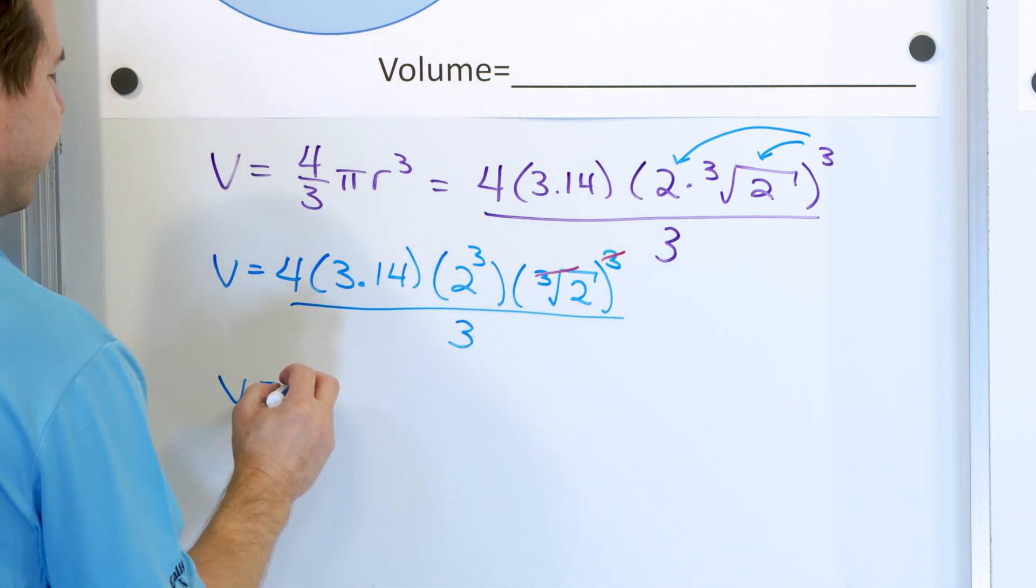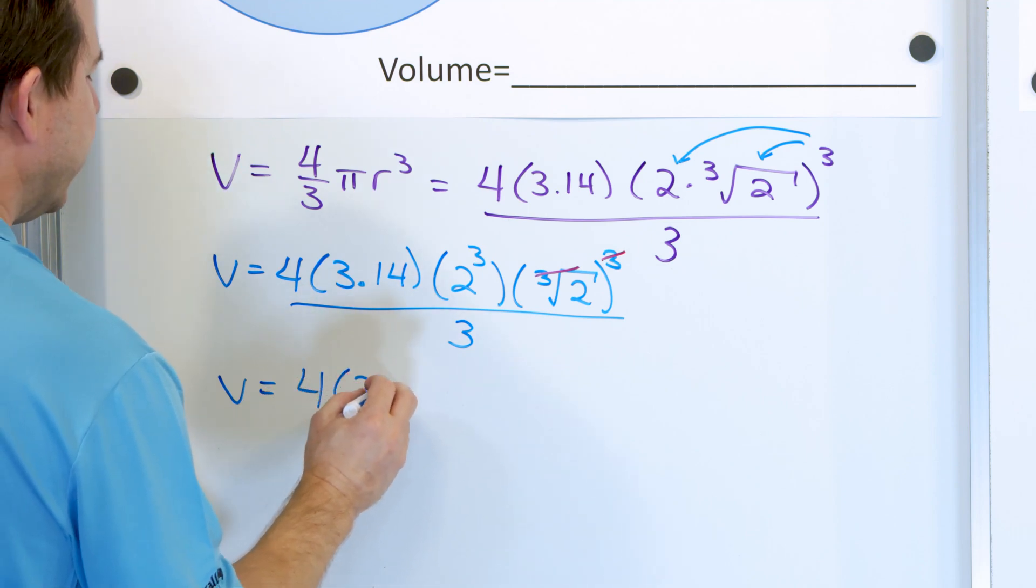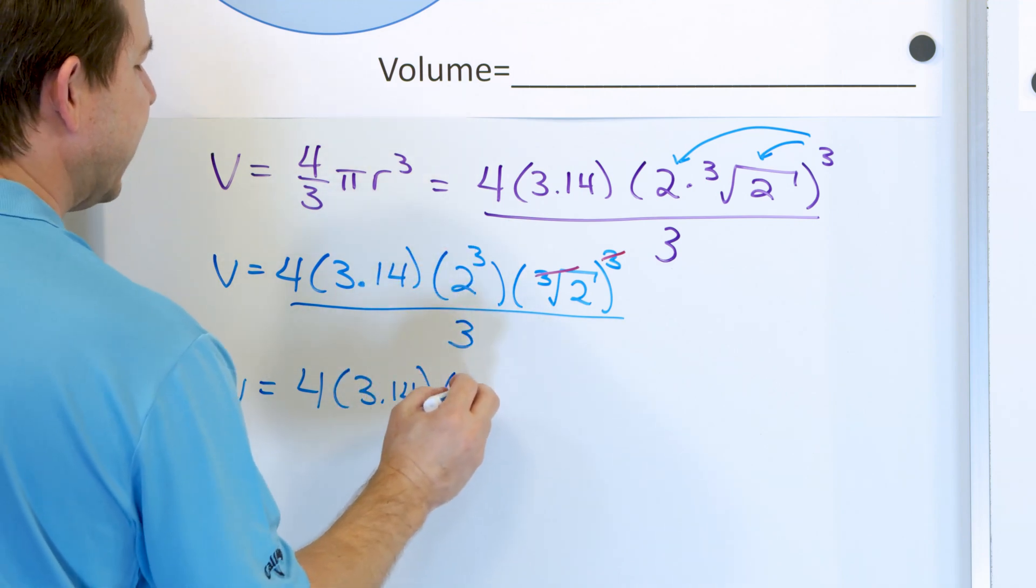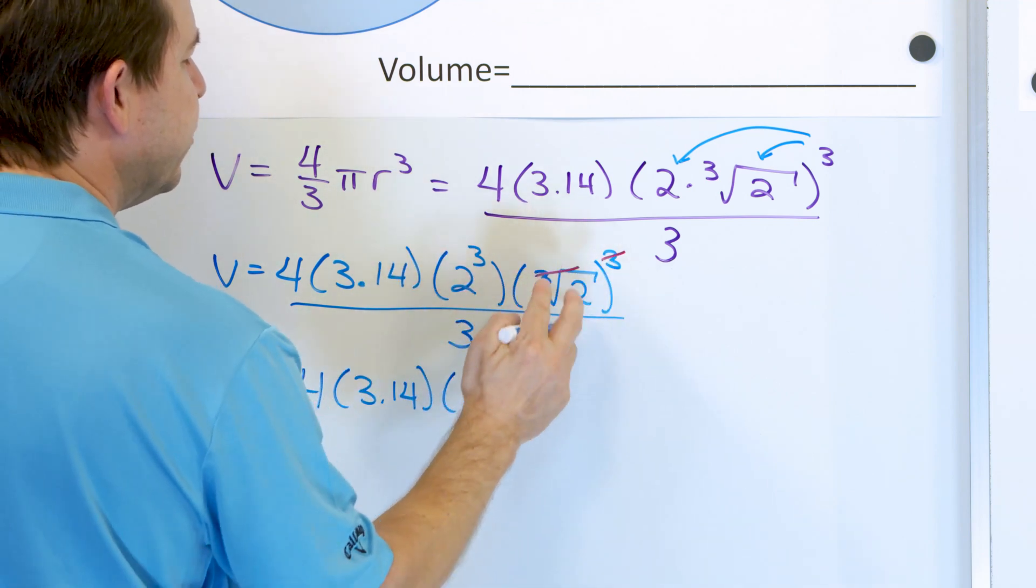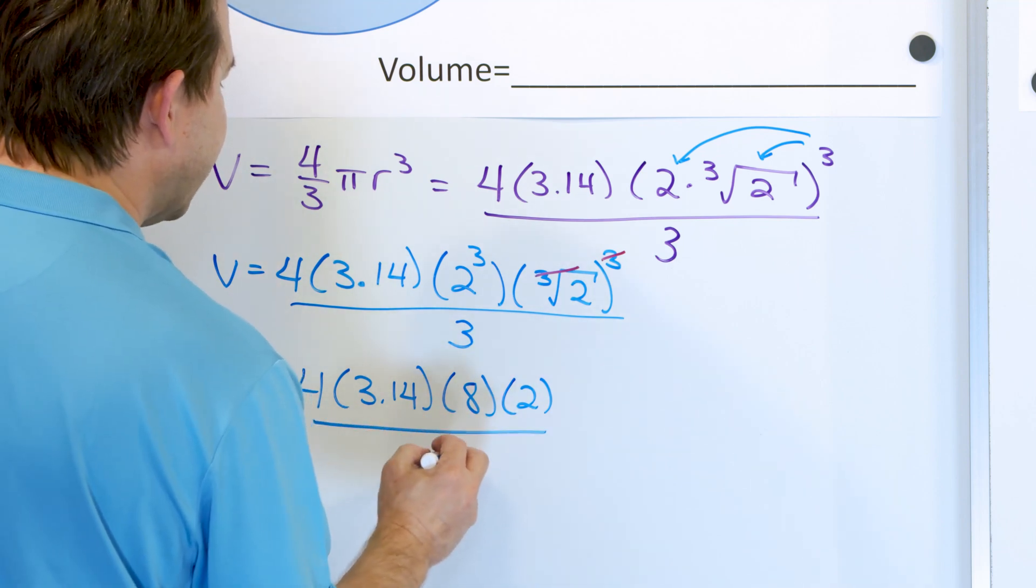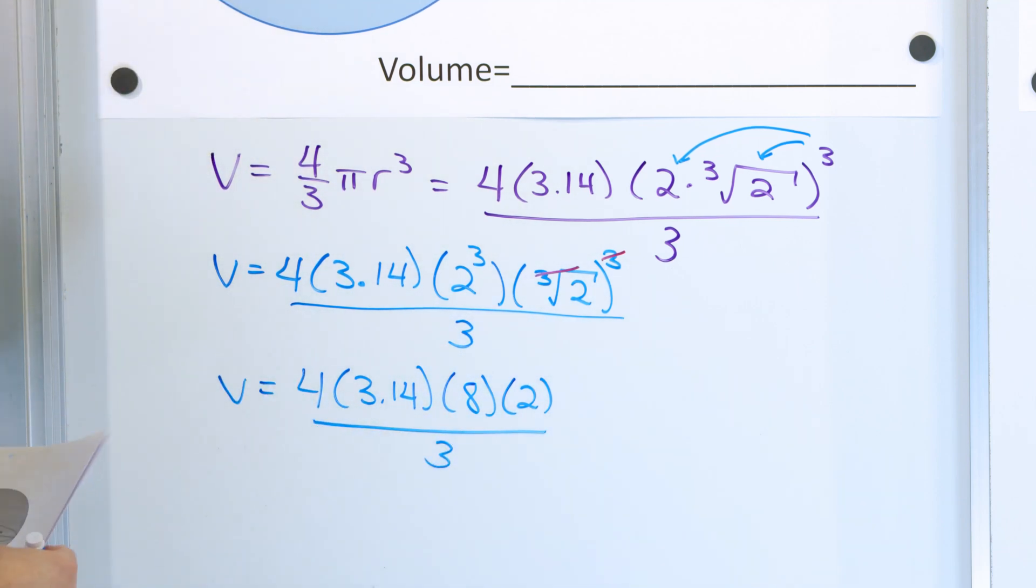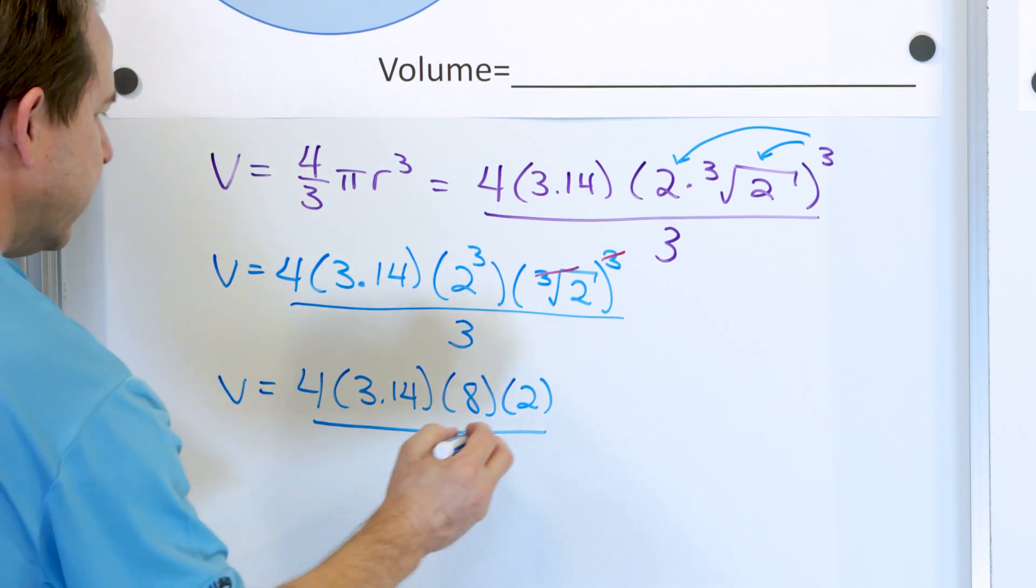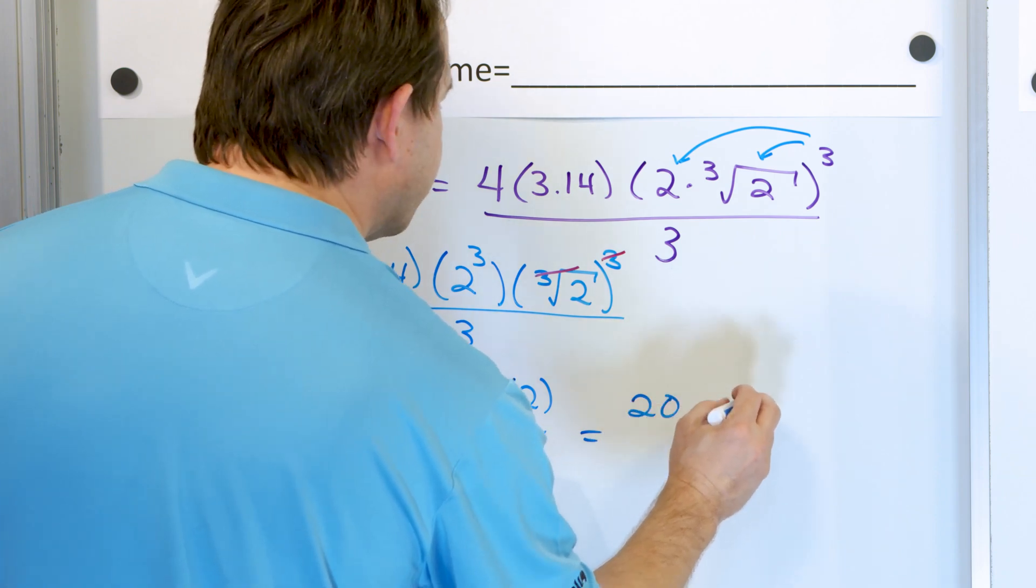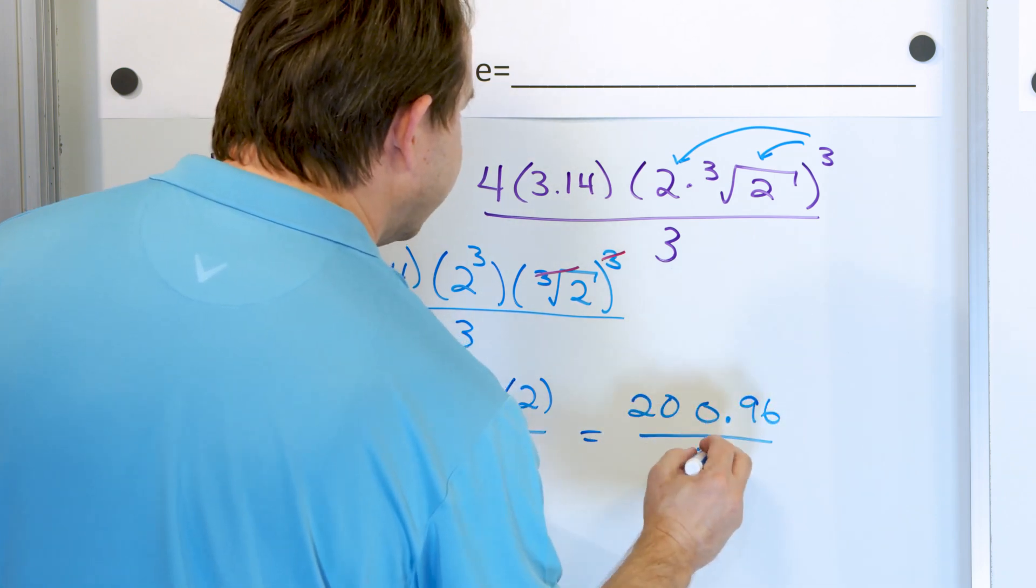So they cancel as well. Don't forget the whole thing here is divided by 3. So we have 4 times 3.14 times 2 cubed. That's 2 times 2 times 2, that's actually 8. And then the cube and the cube root cancel, leaving 2 behind. And then we're going to divide the whole thing by 3. So 4 times 3.14 times 8 times 2 works out to be 200.96, and then the whole thing is divided by 3.